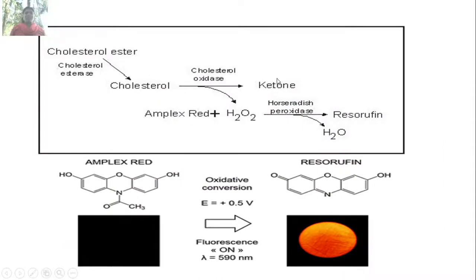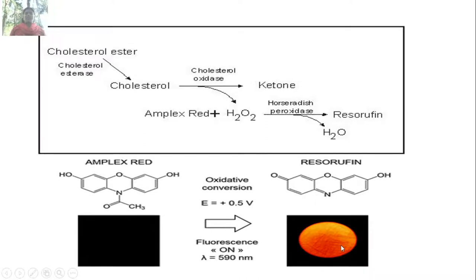Cholesterol ester is converted into cholesterol, which is degraded to a ketone compound by cholesterol oxidase. This ketone forms compounds with Amplex Red, giving a resorufin compound that produces fluorescence, catalyzed by horseradish peroxidase. H2O2 is converted into water. The Amplex Red compound undergoes oxidative conversion into a colorful compound that is used for estimation of cholesterol in biological samples.